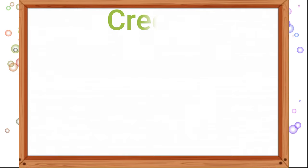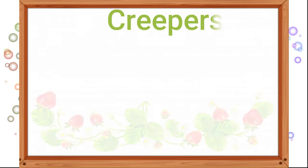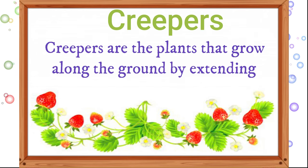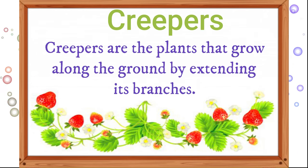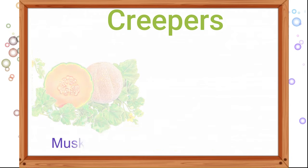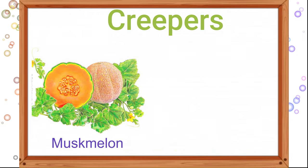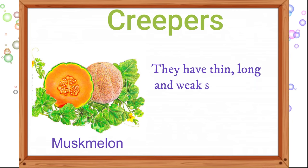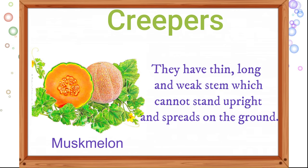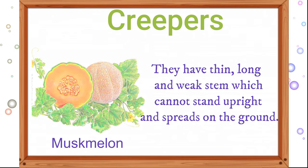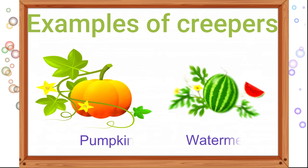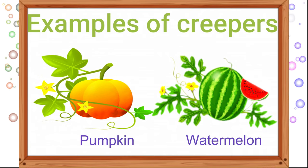Next one: creepers. Creepers are plants that grow along the ground by extending their branches. They have thin, long, and weak stems which cannot stand up straight and spread on the ground. Examples of creepers are pumpkin and watermelon.